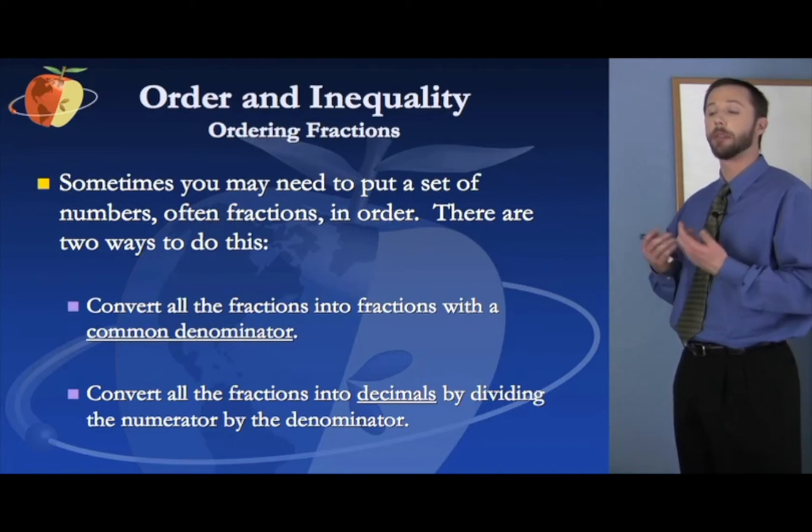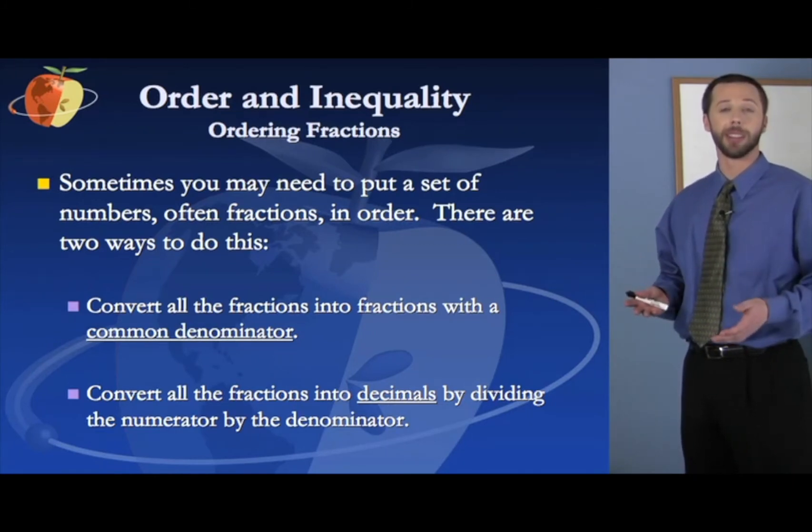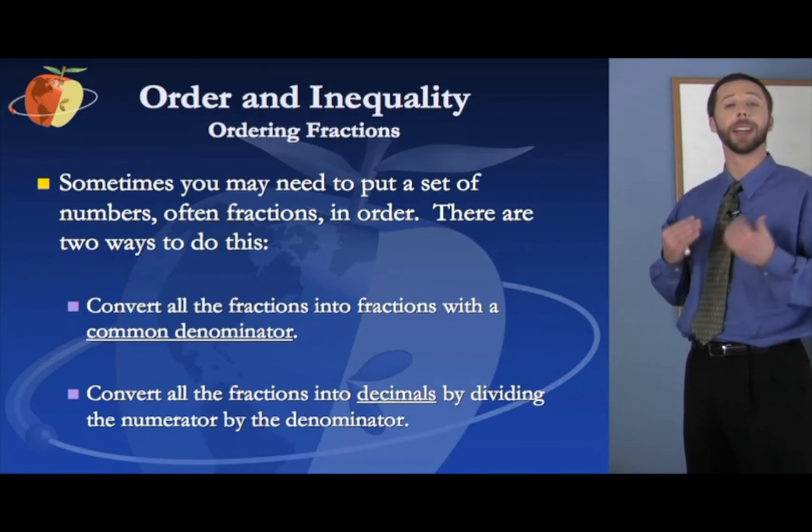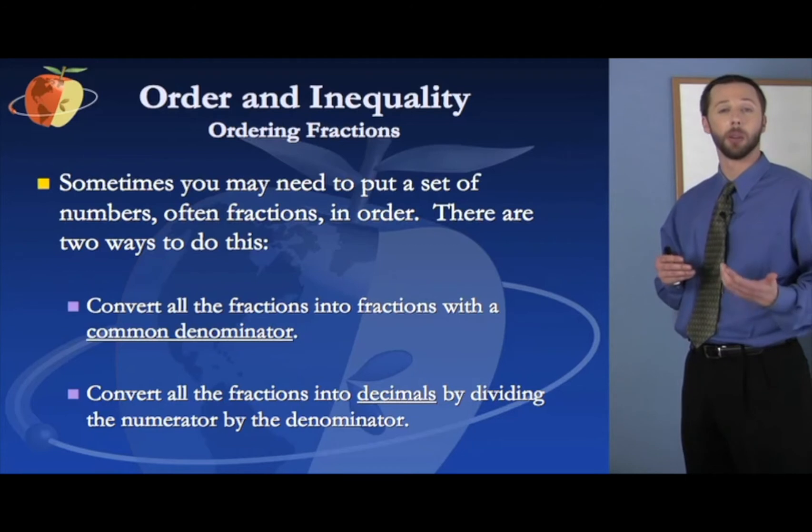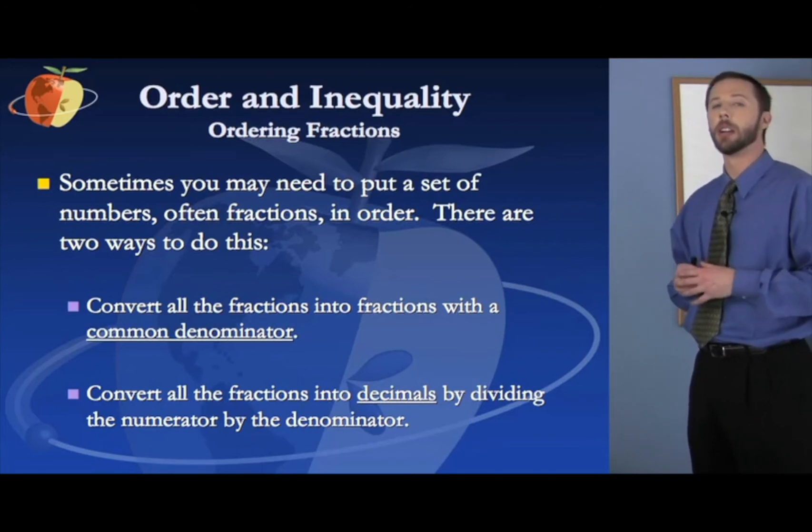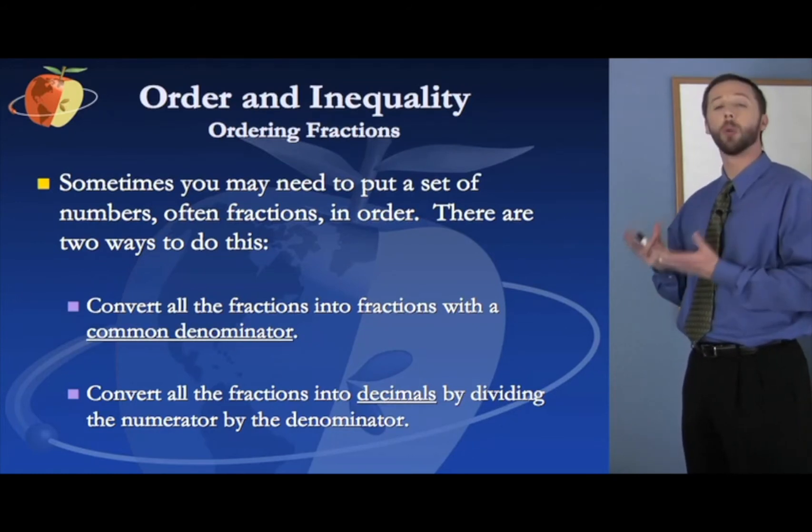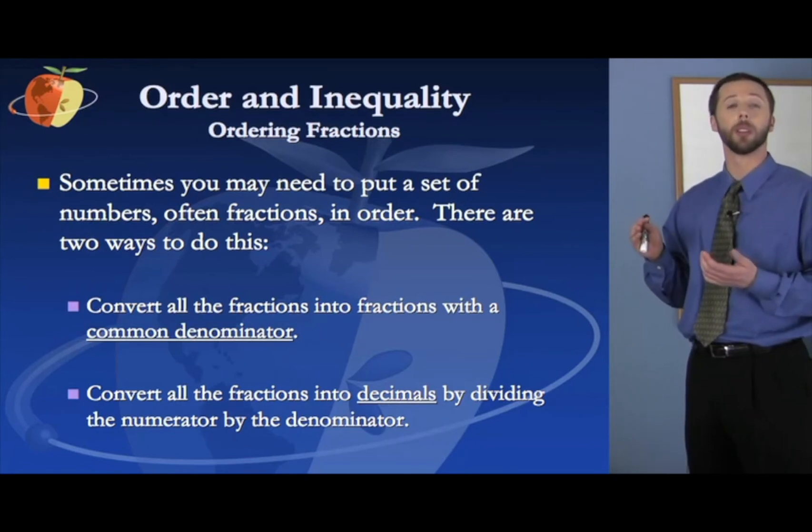The first is to convert all the fractions into fractions with a common denominator. The easiest way to find a common denominator is to just multiply all the denominators. That doesn't necessarily give you the smallest common denominator, but a hundred percent of the time, it will give you a common denominator. Then you just need to convert the numerators by multiplying them by whatever thing you multiply the denominator by. So we've talked about this in other sections. You can review that idea of how to find a common denominator in those specific sections that deal with fractions. So that's one way to do it. Convert them to a common denominator, then look at the numerators, and just make sure that the numerators are placed in proper order.